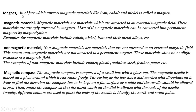What is a Magnet? Define Magnet. An object which attracts magnetic materials like Iron, Cobalt, and Nickel is called a Magnet. Magnetic Materials are materials which are attracted to an external magnetic field. These materials are strongly attracted by magnets. Most magnetic materials can be converted into permanent magnets by magnetization.